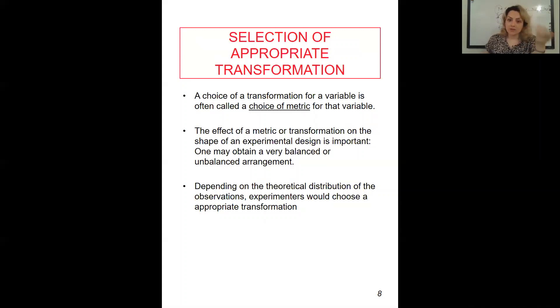One may obtain a very balanced or unbalanced arrangement depending on the theoretical distribution. This is the part I was telling you, if you have Poisson distribution, if you have binomial distribution. So depending on theoretical distribution, after observations, experimenters would choose the appropriate transformation.